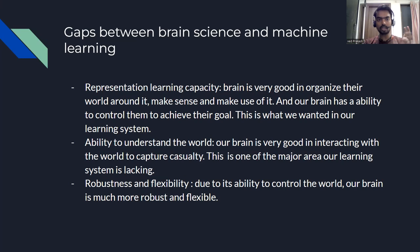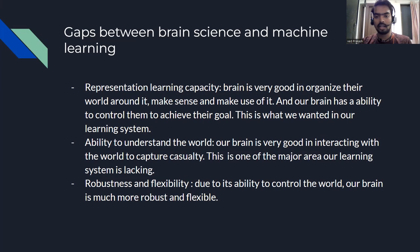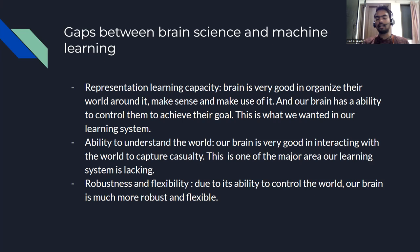If you look at the gap between brain science and machine learning, the first gap is in representational learning capacity. The brain is very good at organizing the world around it, knows how to make sense of the environment, and has the ability to control itself to achieve tasks. This is what we want in our learning systems — systems that have the ability to achieve goals even in a changing environment.